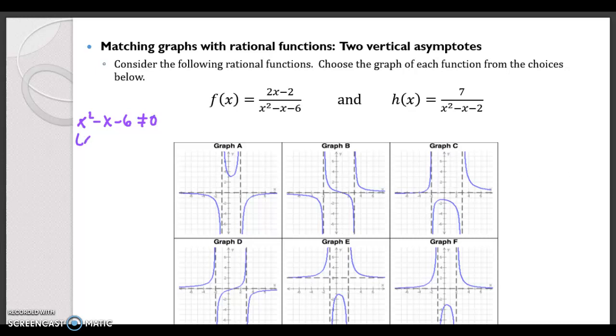So that factors into x minus 3 times x plus 2. So that means our vertical asymptotes are going to be at x equals 3 and x equals negative 2.